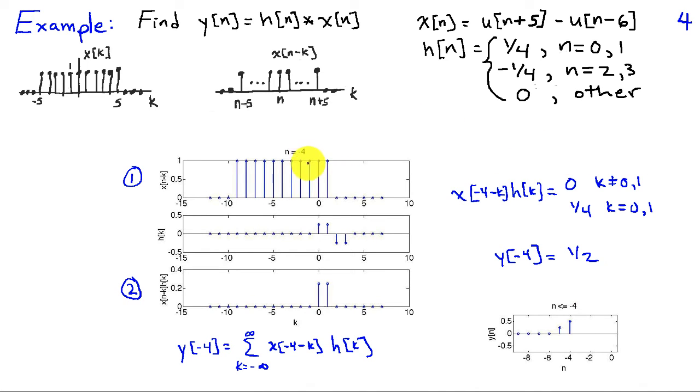Proceeding to n equal minus 4, in this case, the first two values on the leading edge of x of n minus k overlap with h of k. And the product is going to be 1 fourth for k equals 0 and k equals 1. And then when I add all these values up, I end up with 1 fourth plus 1 fourth or 1 half.